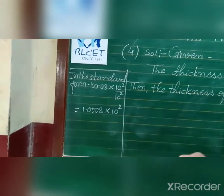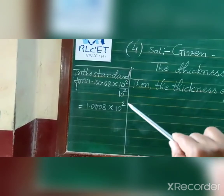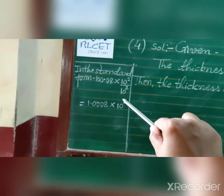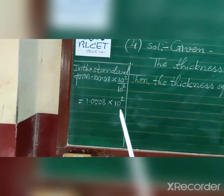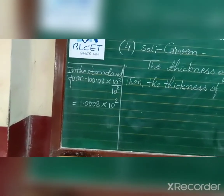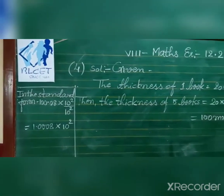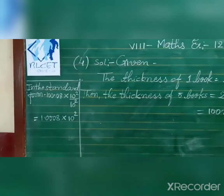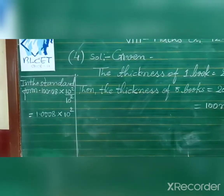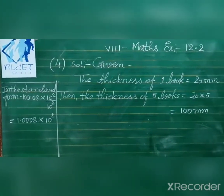Now writing 100.08 in standard form: we want the decimal after the first digit, so we move it two places to the left. We multiply and divide by 10 to the power 2. Moving left, we use the denominator's exponent form. The answer is 1.0008 × 10 to the power 2. All the laws of exponents you already know: x to the power m times x to the power n = x to the power m plus n, and so on.